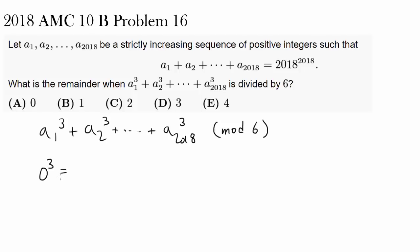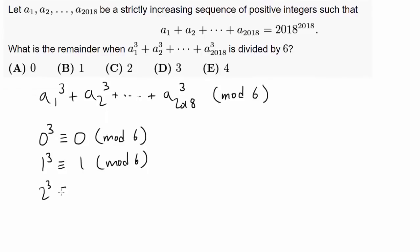For example, 0 cubed is equal to 0 in mod 6, 1 cubed is going to be congruent to 1 in mod 6, and 2 cubed is 8, which is congruent to 2 in mod 6, and 3 cubed, which is 27, is congruent to 3 in mod 6. We seem to see some pattern. It seems like when we cube 0, we get 0. When we cube 1, we get 1. When we cube 2, we get 2. And when we cube 3, we get 3 in mod 6.